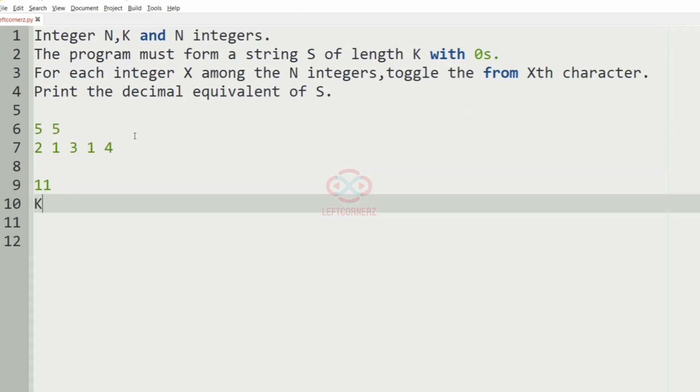So in this case, we have k equal to 6 and the string S. First we'll have 6 zeros.